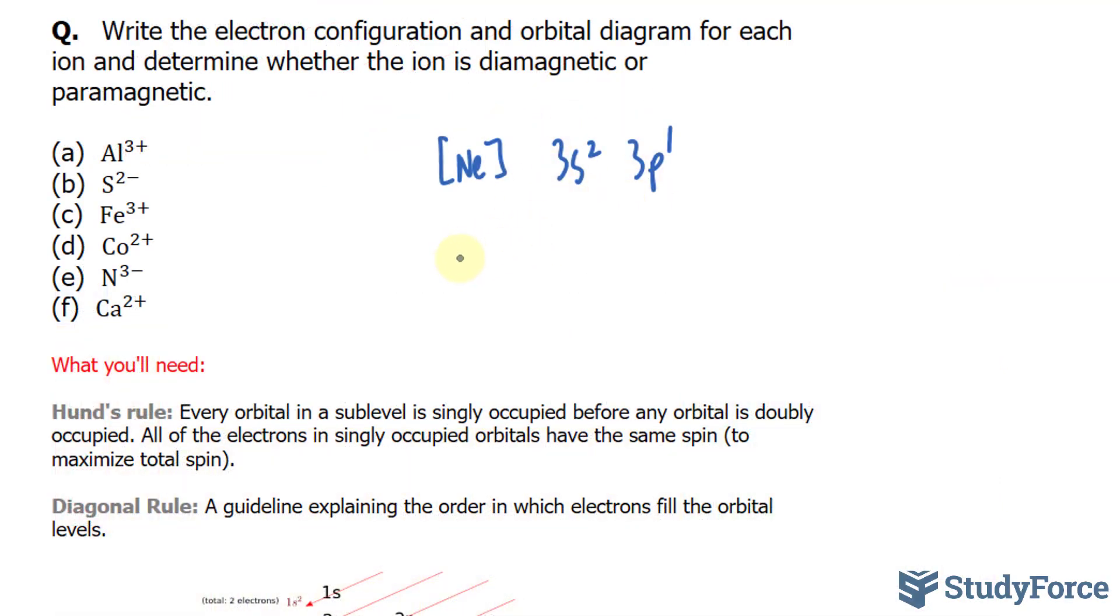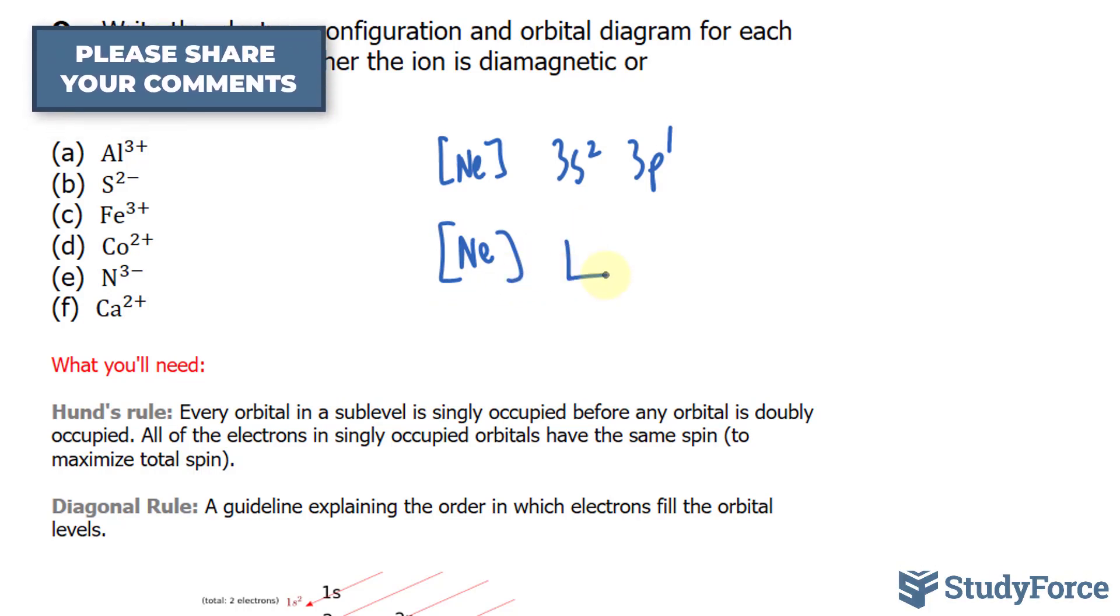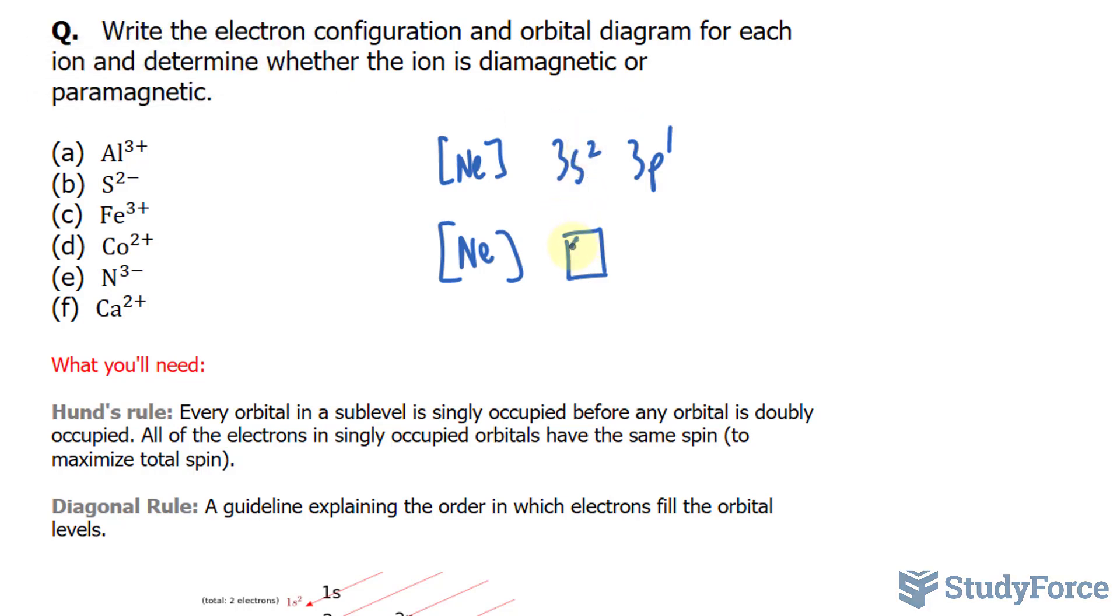Going back to our electron configuration, this can be written as Ne for our orbital diagram. The s orbital gets one box, and it has two electrons. One, two. Then we have the p orbital. This can hold up to six, so we'll draw three boxes. And it has one electron, so one spinning up. So these three electrons disappear because of the ionic charge.